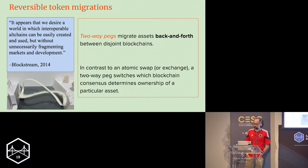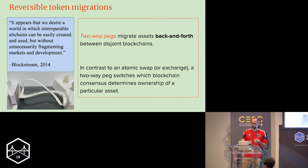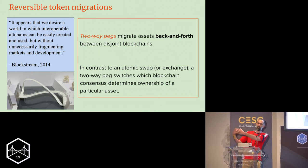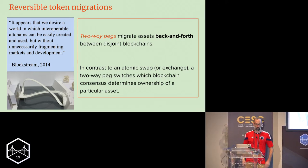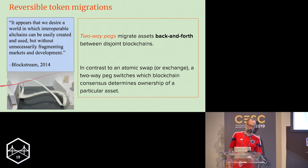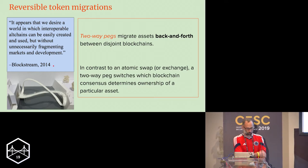To contrast this with the atomic swap or an exchange, the Two-Way Peg actually switches which blockchain consensus determines ownership of a particular asset. When I transfer it over a Two-Way Peg, I'm now allowing another consensus mechanism to say who owns what. This was a program initiated by Blockstream as early as 2014.